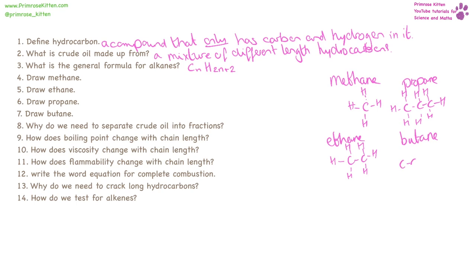Butane has four carbons. We really need to know that when we get to A level there is actually a quicker way of drawing hydrocarbons. Why do we need to separate crude oil into fractions? Because each fraction has different properties and different properties are used for different things.